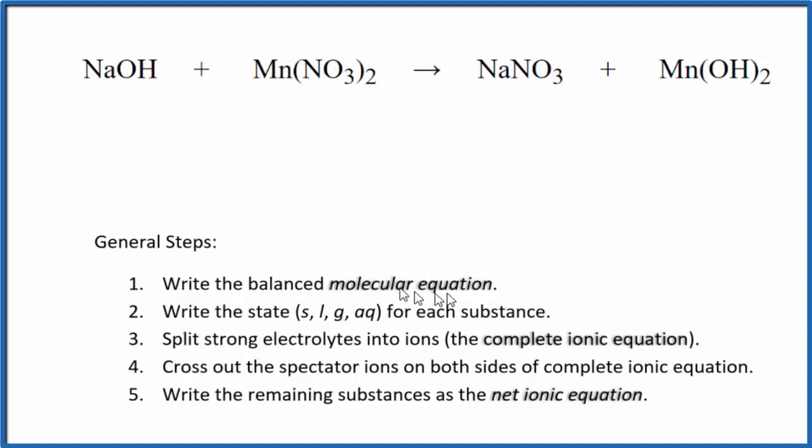First thing with net ionic equations, we balance the molecular equation. I can see I have two nitrate ions here and just one here, so I'm going to put a 2 in front of the sodium nitrate. Now I have two sodium ions and only one here, so I'm going to put a 2 here. That balances the sodium, gives me two hydroxides, but I have two hydroxides over here, so that's good. That's balanced. We have manganese, manganese, all good. The molecular equation is balanced.